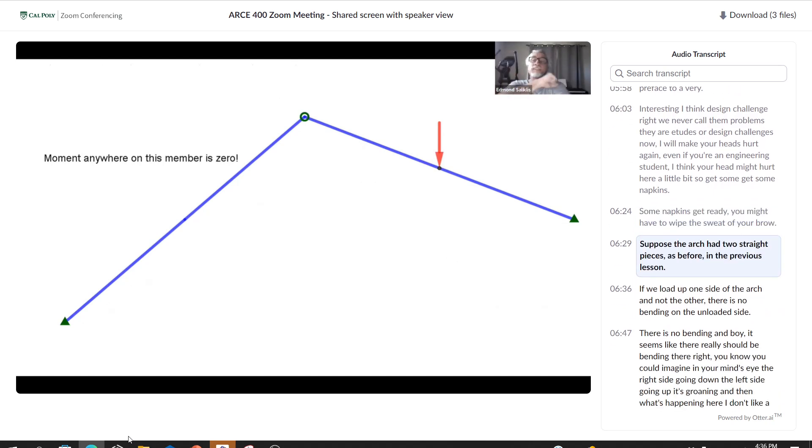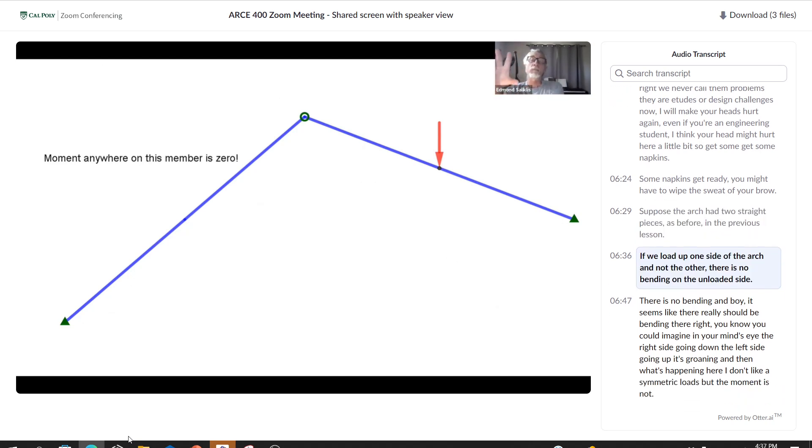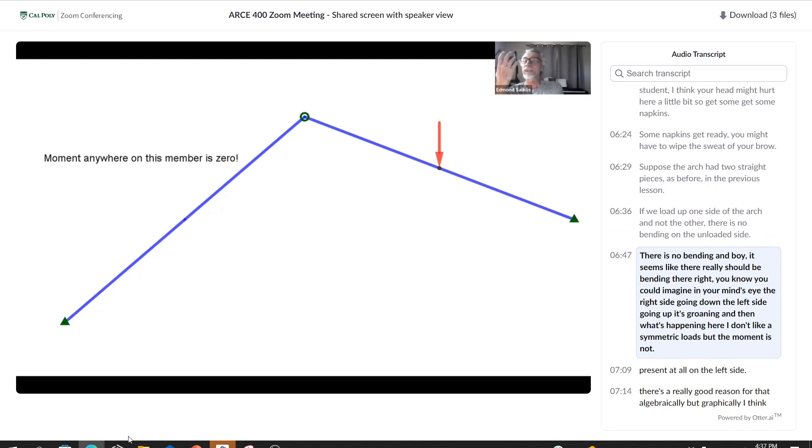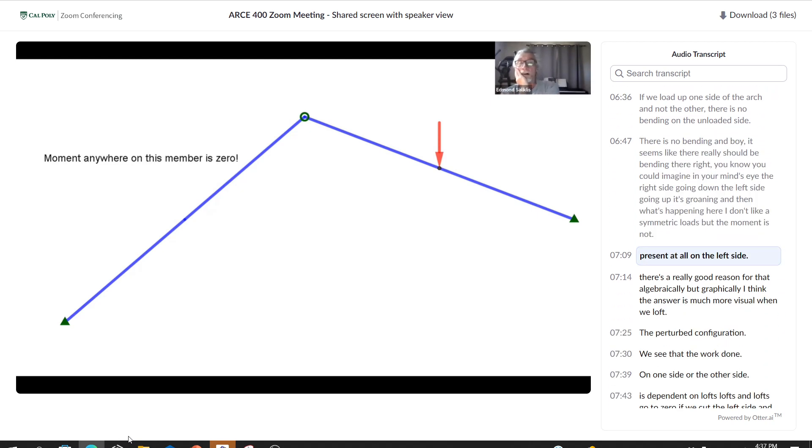Suppose the arch had two straight pieces as before in the previous lesson. If we load up one side of the arch and not the other, there is no bending on the unloaded side. There is no bending and boy it seems like there really should be bending there, right? But the moment is not present at all on the left side.